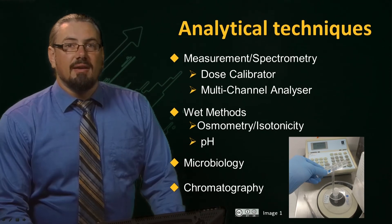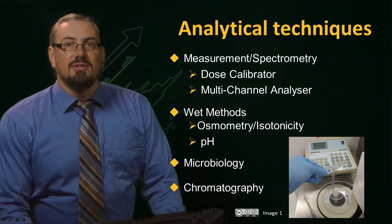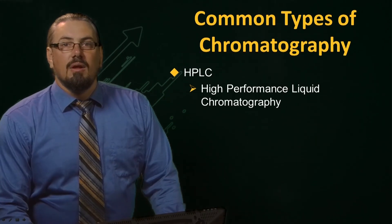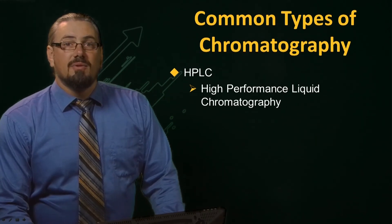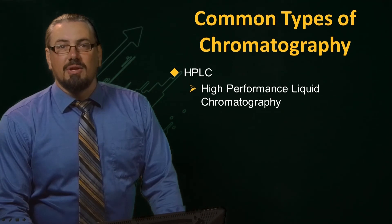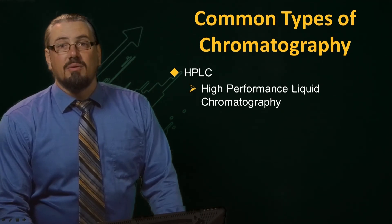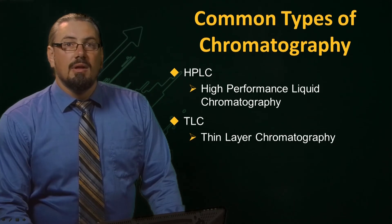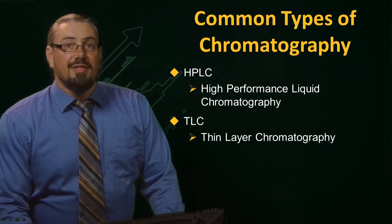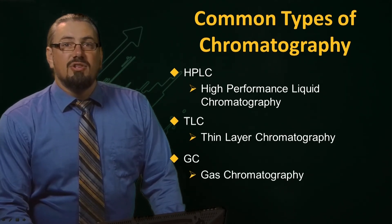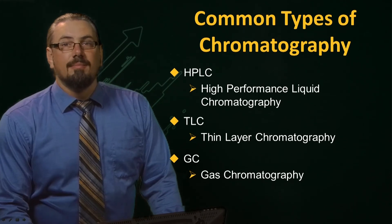Microbiological testing is performed to ensure that the radiopharmaceutical is sterile and pyrogen free. Various chromatographic techniques are used to test various product specification criteria. The common types of chromatography used include HPLC or high-performance liquid chromatography, TLC or thin layer chromatography, and GC or gas chromatography.